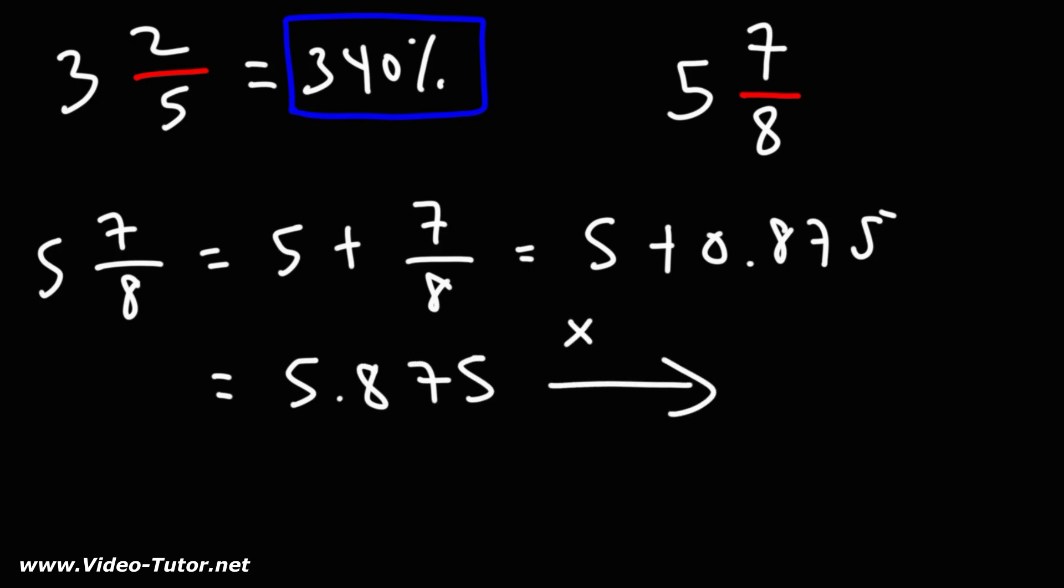Now to convert that to a percentage, we've got to multiply by 100%, which is the same as moving the decimal point two units to the right. So this is going to be equal to 587.5%. That's how you can convert a mixed number into a percentage.